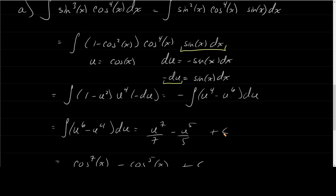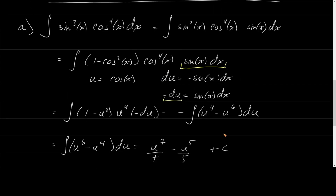To recap: I split off one of the sines and put it at the very end, rewrote the remaining sine squared in terms of cosine, then performed u-substitution.